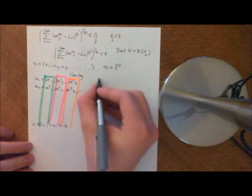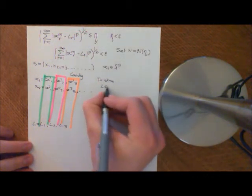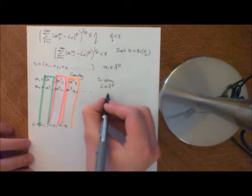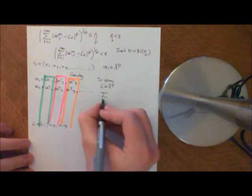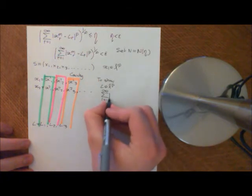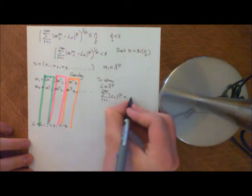To show L is an element of LP, we need to show that the sum from I equals 1 to infinity of the modulus of all the terms, so LI to the power of P, is finite.